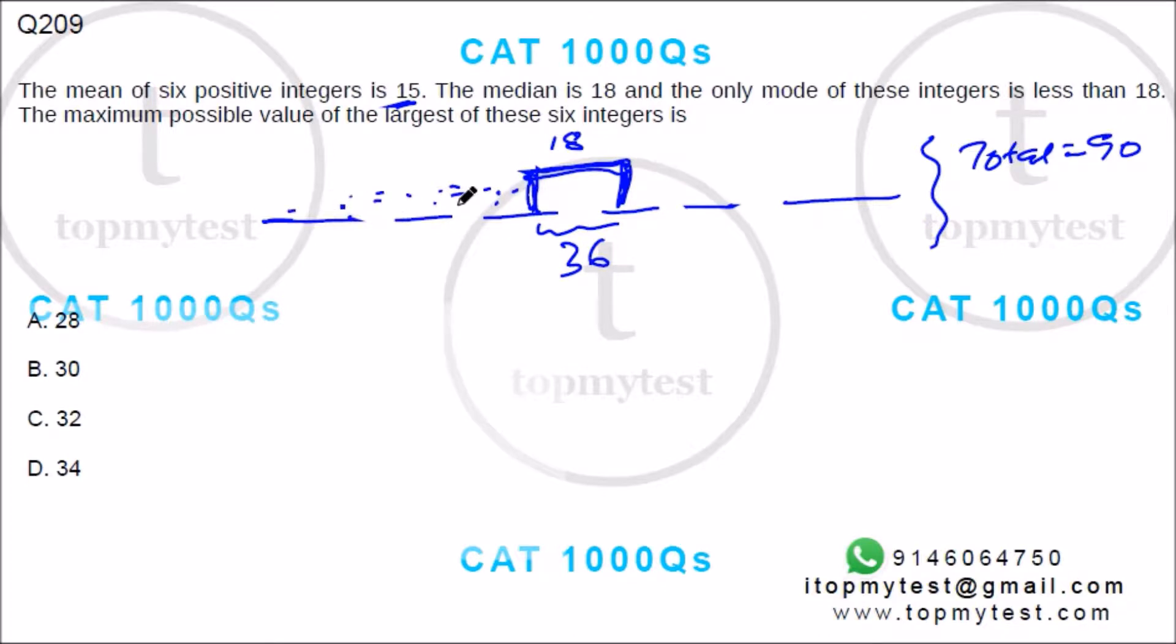What is the maximum possible value of the largest of these six integers? To increase the value of this, I need to reduce the values of all the others. Sum of these six is 90.